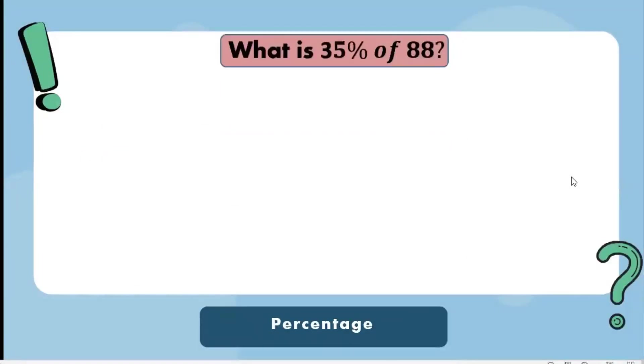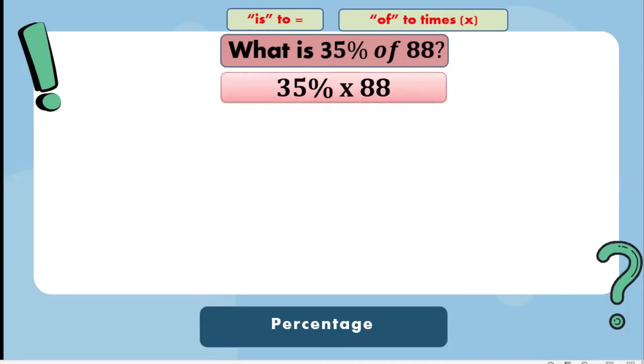What is 35% of 88? Change is to equal, of to times. So we can write it as 35% times 88. Let's solve it.